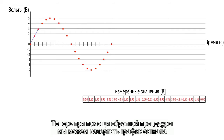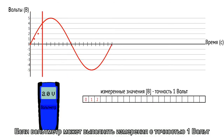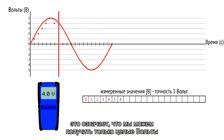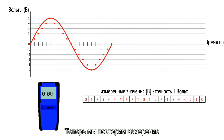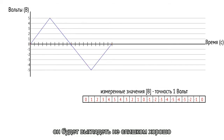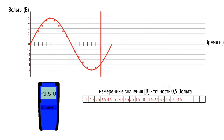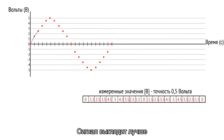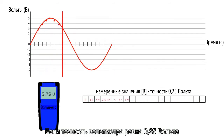Now we can apply the inverse procedure and draw the signal. The accuracy of the voltmeter is the key factor of conversion quality. If the voltmeter can only measure with precision of one volt, we get just whole volts: one, two, three, and so on. If the voltmeter can also measure half volts, the signal looks better. If the accuracy is one quarter volt, the signal looks almost like the analog signal.